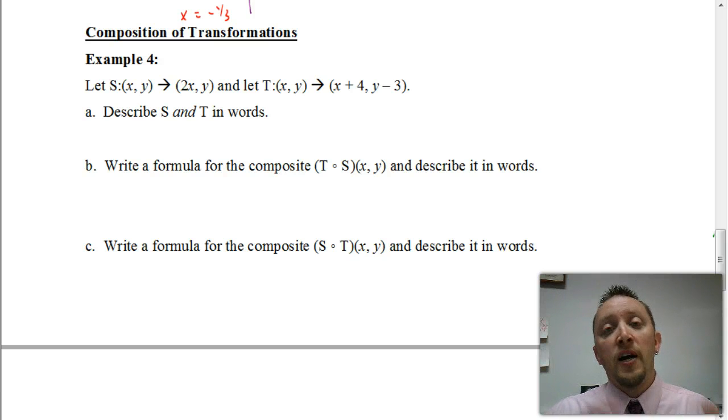Previously in this chapter, we've talked about two types of transformations. We talked about a translation, which is where we're moving a graph left or right, up or down. And then we also talked about a scale change. A scale change is where the graph is being stretched horizontally and or being stretched vertically.